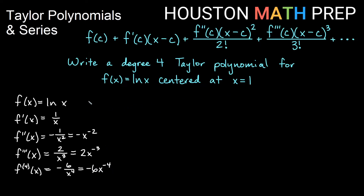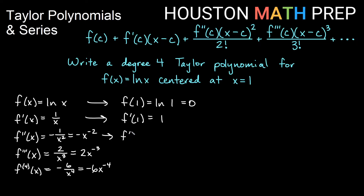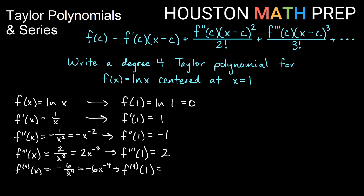Now we'll plug in x equals 1. f of 1 is ln of 1, which equals 0. f prime of 1 is 1 over 1, which is 1. The second derivative at 1 is negative 1 over 1, so negative 1. The third derivative at 1 is 2 over 1 cubed, giving 2. The fourth derivative at 1 is negative 6 over 1 to the 4th, giving negative 6.